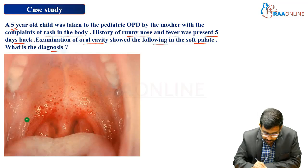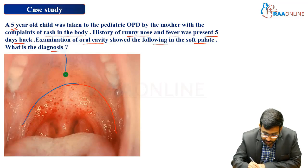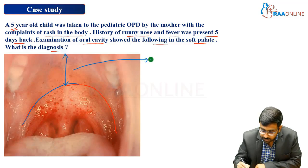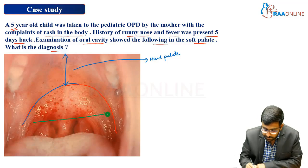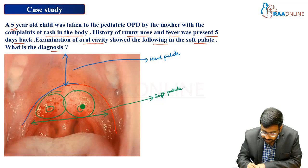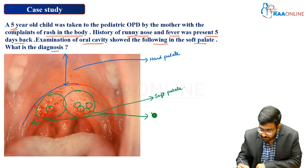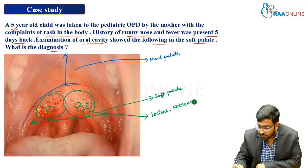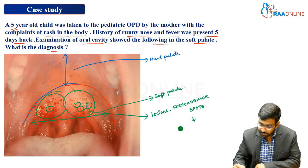Here you are able to see the palate. We can divide it into the hard palate and the soft palate. You are able to see some particular red lesions on the palate. These lesions are nothing but what are called Forchheimer spots, which are a pathognomonic feature of rubella. So this is a case of rubella.